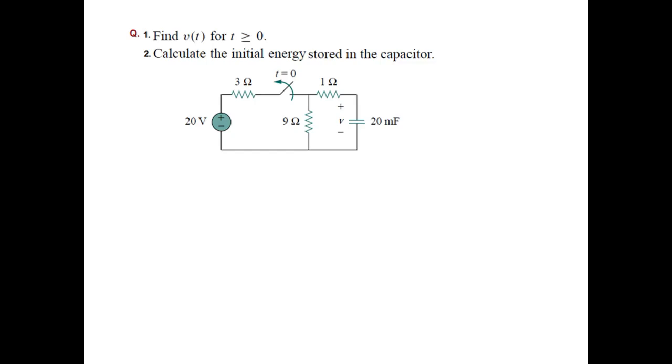Now we have to calculate V0 first of all. If you look at this switch, this switch is closed before t equals zero. That means our equivalent circuit will become something like this before t equals zero.